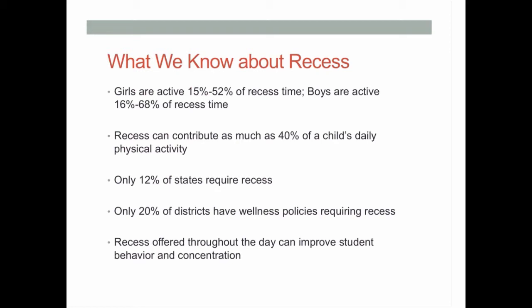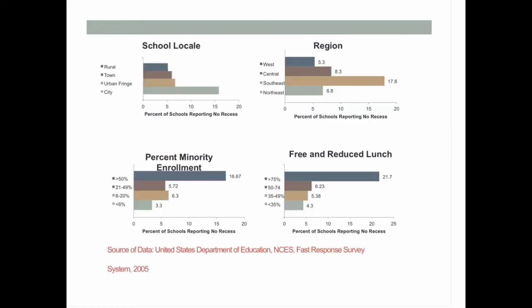We also know that recess is not required a lot, and that activity breaks throughout the school day can improve behavior and concentration. Interestingly, students in the city, students in the southeast, and students in schools with higher percentages of minority students and free and reduced lunch had fewer recess opportunities. These are also the populations with the largest health disparities. I'm not saying recess is the reason for those health disparities, but it's another thing we're removing from those populations that has health benefits, and it appears we're systematically removing it.